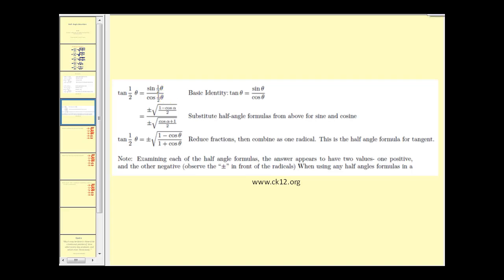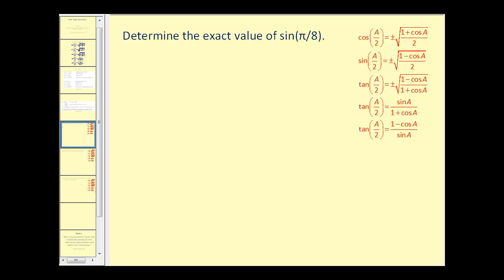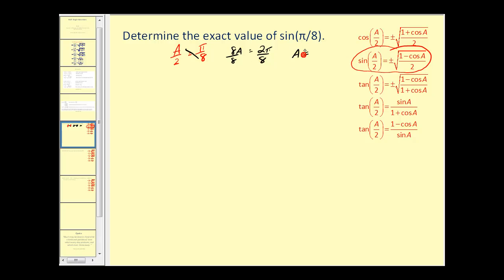Let's go ahead and take a look at some problems. Here we want to determine the exact value of sine pi over eight. We know we're going to use this identity. The first thing we should do is find the value of angle A. We want A over two to equal pi over eight. So if we perform cross products, we'll have eight A must equal two times pi. Dividing by eight, we can see that A must equal two pi over eight, or pi over four. So we're going to have the sine of pi over eight equals the sine of pi over four divided by two.